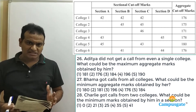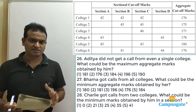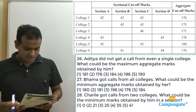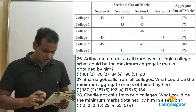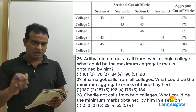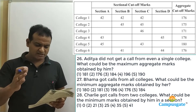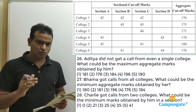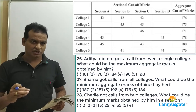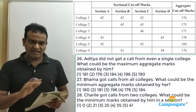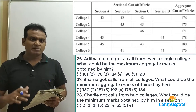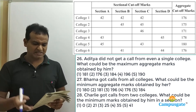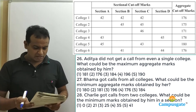This is a CAT 2008 LRDI question based on cutoff marks for respective colleges. There are three people: Aditya, Bama, and Charlie. There are six colleges that conduct a common entrance test. There are four sections in that test, and each section has an individual cutoff mark. Unless you cross the cutoff marks specified by that college, you won't get a call from that particular college. Apart from satisfying the minimum sectional cutoff marks, you also have to get overall aggregate marks, which are also specified. Let's have a look at the table.